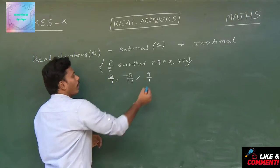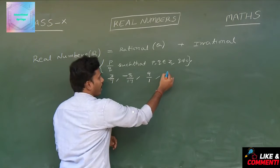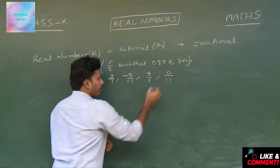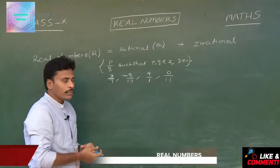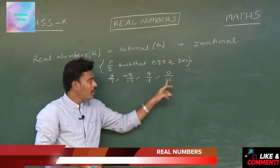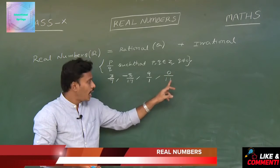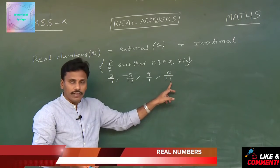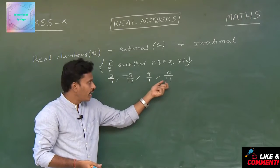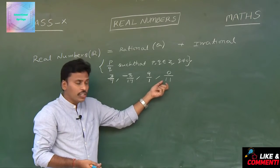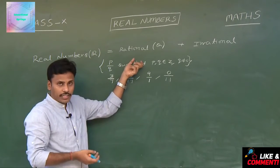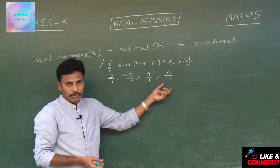Consider the number 0 divided by 11. Here both the numerator P and denominator 11 are integers, and the denominator is non-zero. So 0 by 11 is in the form of a rational, and this is a rational number.